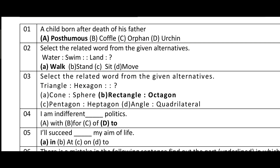Question number three: select the related word — triangle and hexagon. Triangle mein teen angles hote hain aur hexagon mein zyada. Rectangle mein 4 angles hote hain aur octagon mein 8 angles hote hain. Correct option is B.